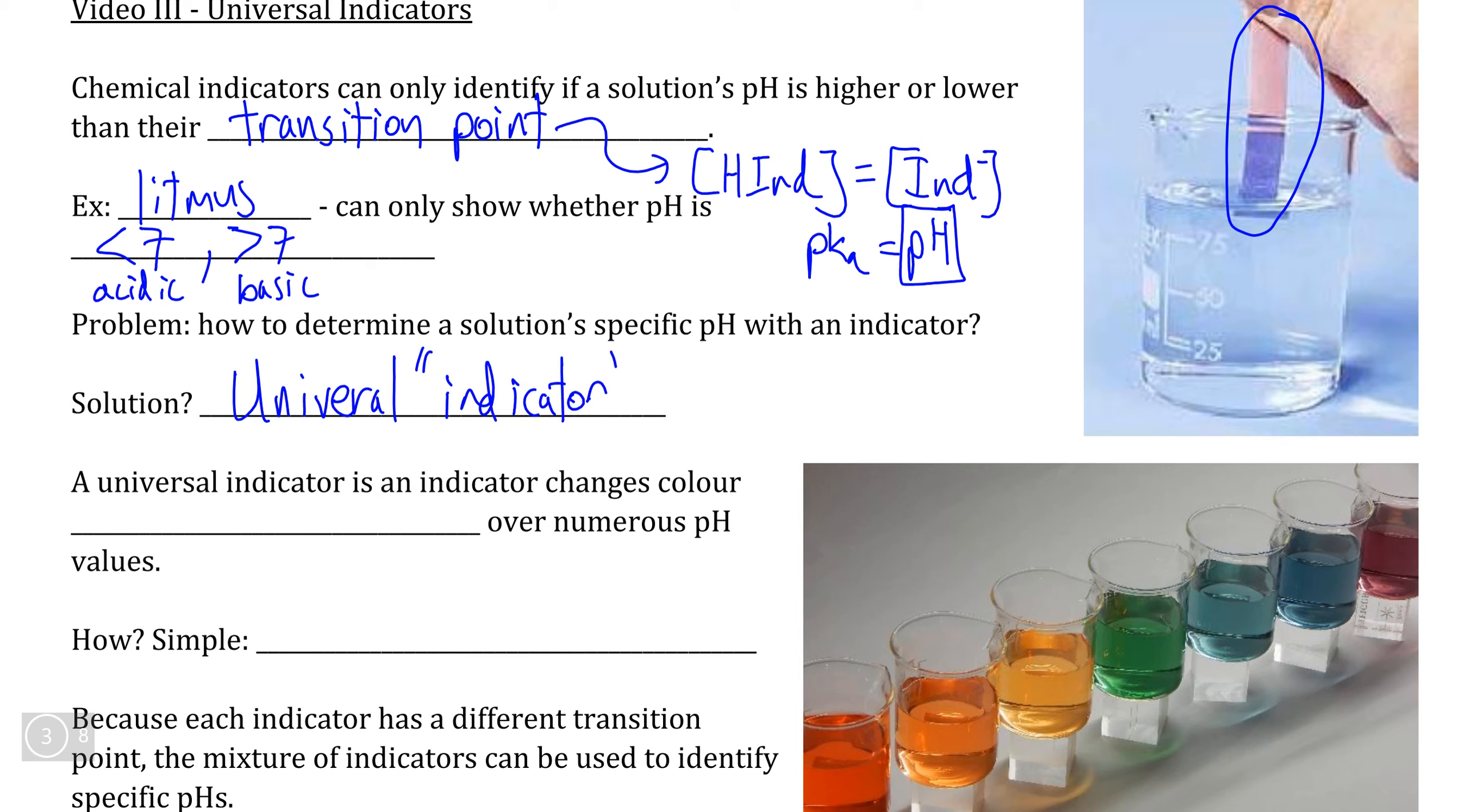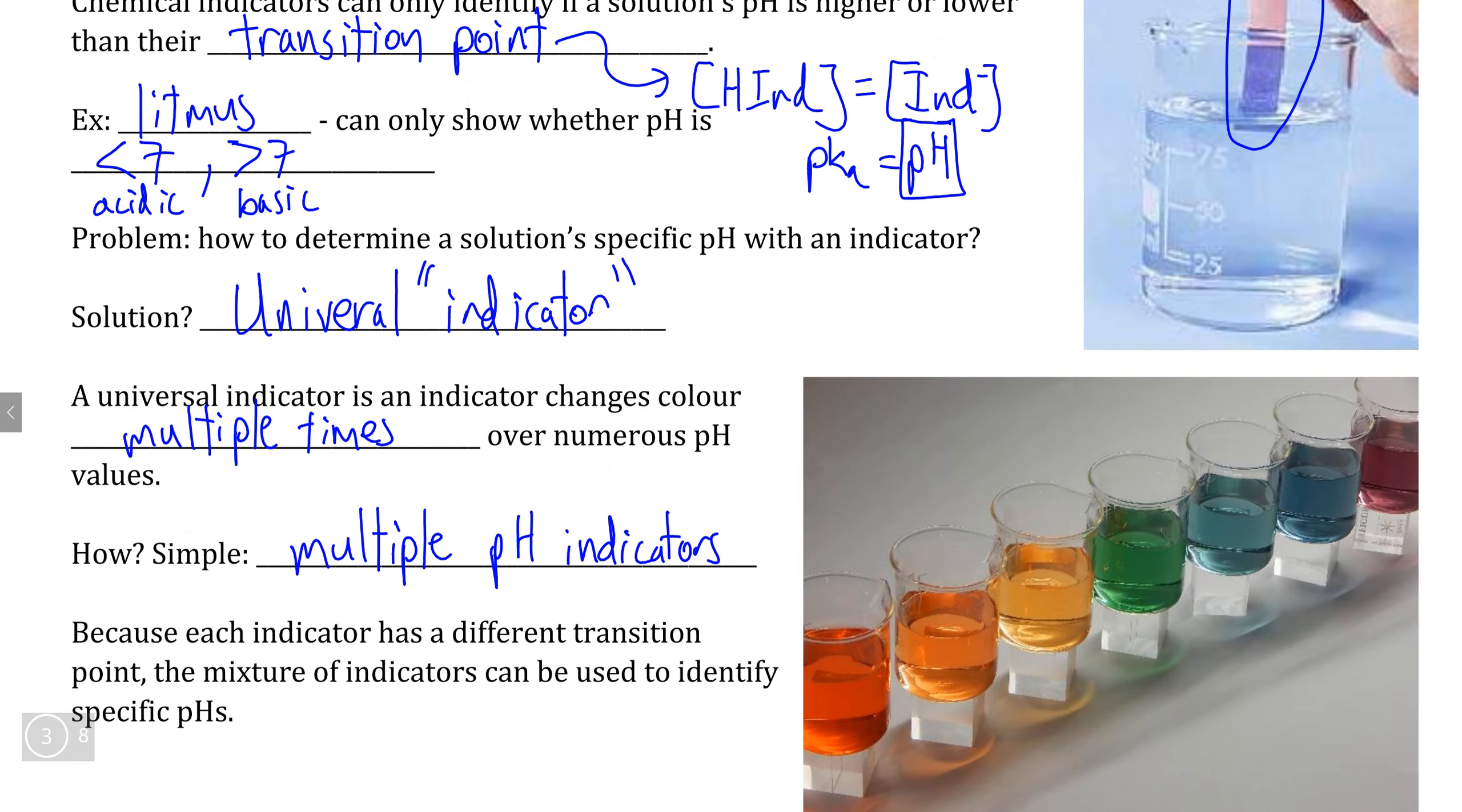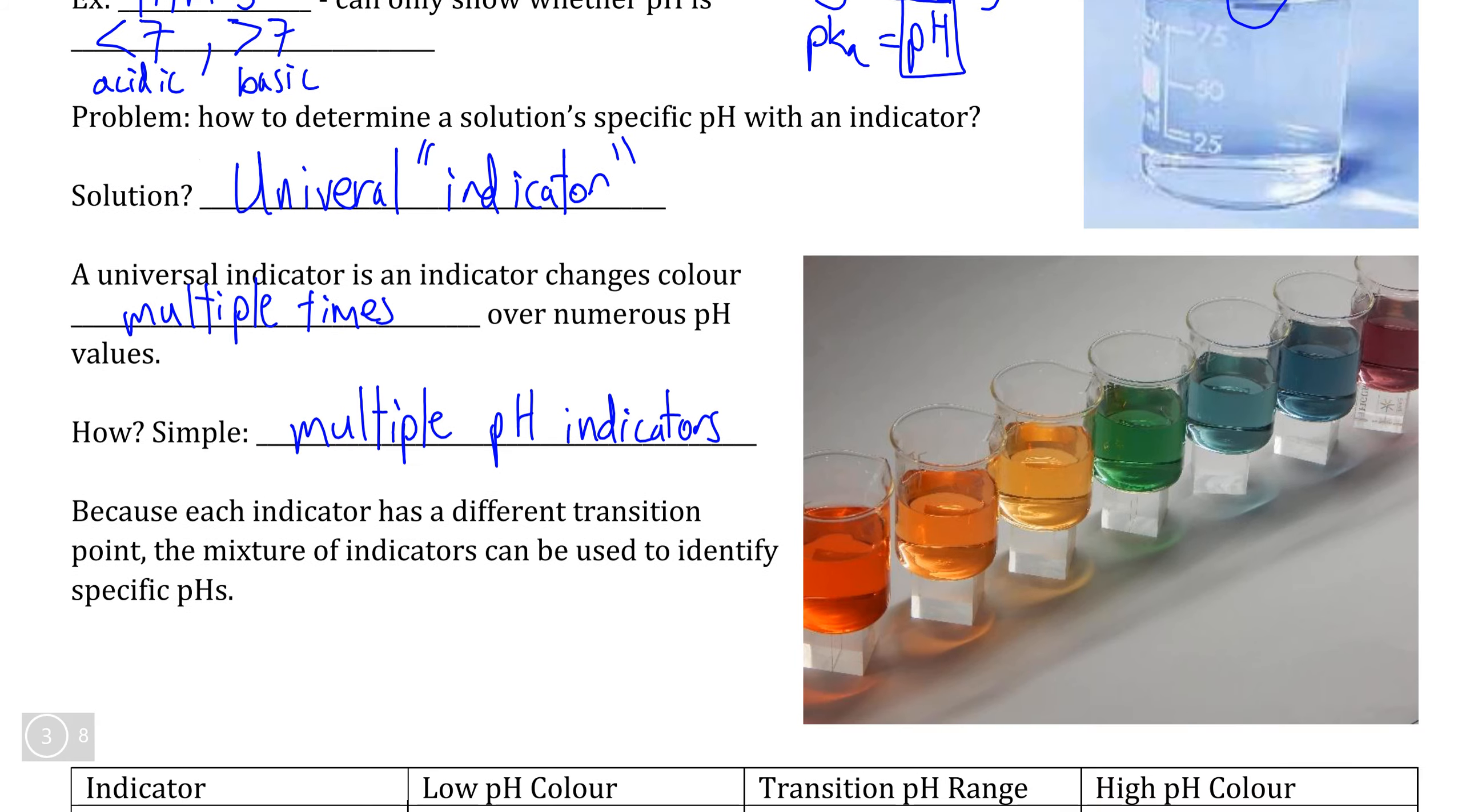Now I'm going to put indicator in quotes because putting universal indicator and then leaving the singular is a little bit misleading. So the way that universal indicator works, as we can see with this range of different colors here, a universal indicator is an indicator that actually changes color multiple times over a wide range of pHs. Now the reason why indicator is in quotes and why I drew attention to the fact that it's singular here is that we accomplish this by simply using multiple pH indicators. And because each indicator within this mixture has a different transition point, the color changes will occur over a wide variety of pHs.